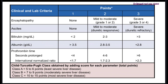There is an easy mnemonic to remember the five parameters: A, B, C, D, and E. A is for albumin. B is for bilirubin. C is for clotting, meaning prothrombin time. D is for distension, which means ascites. E is for encephalopathy.